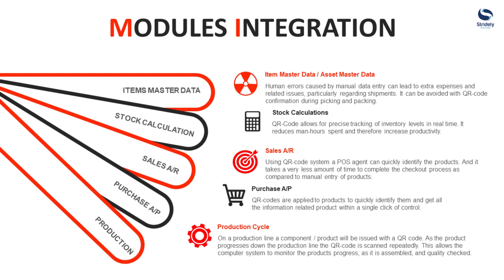Third, sales — simple checkout process. Fourth, accounts payable and purchase — here you will achieve easy identification of products. And last, the production module — by enabling QR codes or barcodes on material issue and receipt transactions, you can get the experience of live streaming of your shop floor operations, which will also help to ensure the quality of your products.